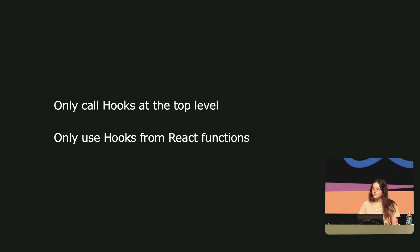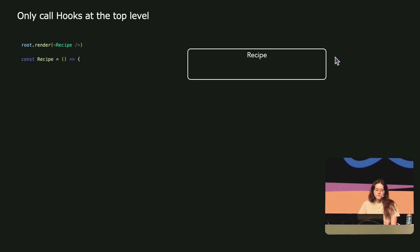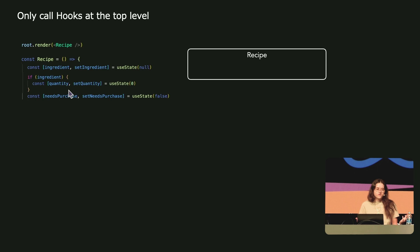Let's begin with the first rule of hooks: only call hooks at the top level. So we're not going to do that — we're going to use a hook conditionally. Inside a recipe example, a recipe that for now only contains a single ingredient. For this ingredient, we have its name and the quantity inside this hook that is called conditionally, so not at the top level.